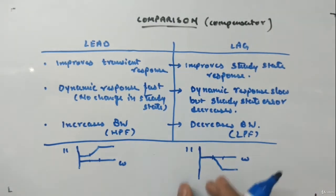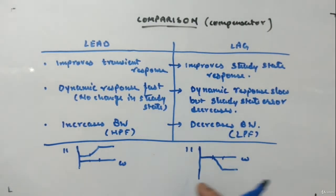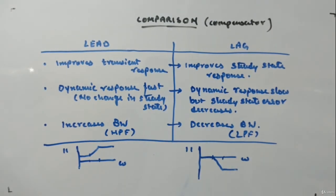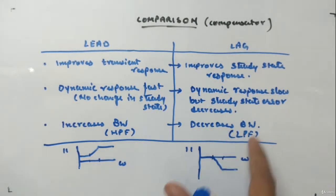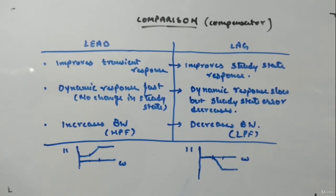Lag compensator behaves as a low pass filter, passing the low frequency components and suppressing the high frequency ones. Because of that, it decreases the bandwidth. So that's the comparison of lead and lag compensators.